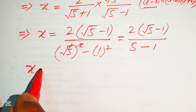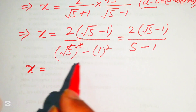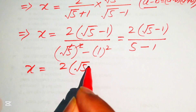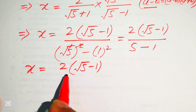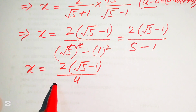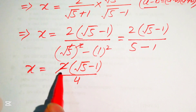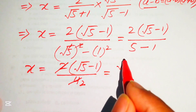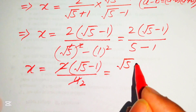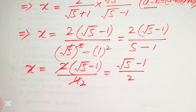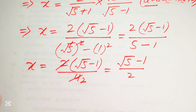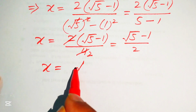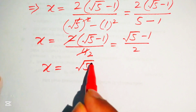We cancel the factor of 2: 2 divides into 4 twice, giving us x = (√5 − 1) / 2. This is the simplified value of x. Now we proceed to find x to the power of 12.